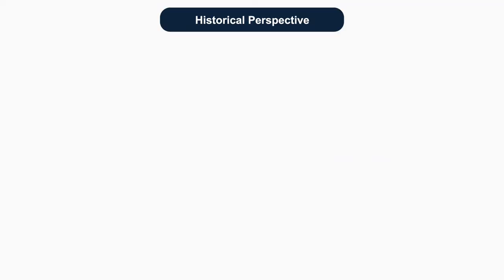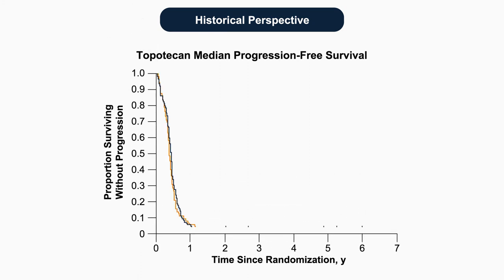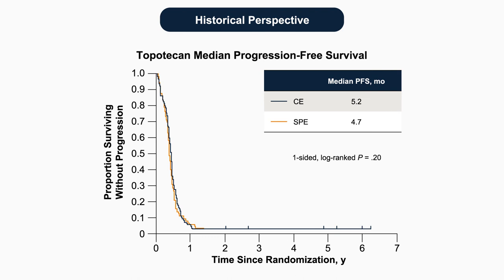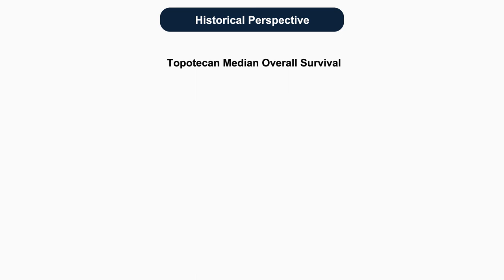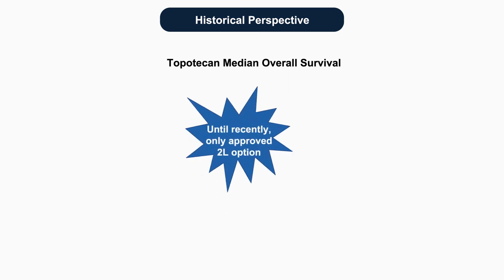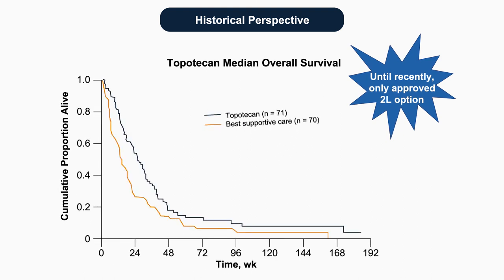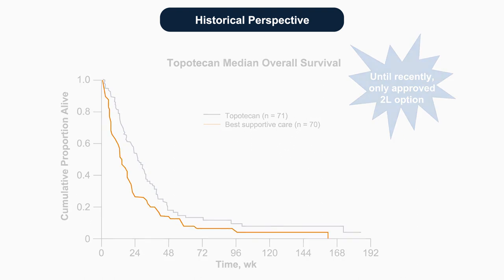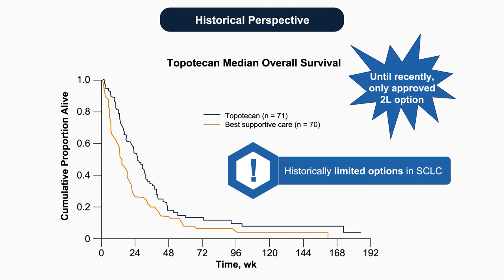When looking at historical perspective for small cell lung cancer, the survival curves have been daunting. As one of my attendings in fellowship would say from the back of the room, that curve is not ski-able, representing the rapid drop-off. Unfortunately, small cell lung cancer curves have looked that way. Looking back at topotecan, which until recently was the only second-line approved option, we see a survival curve relative to best supportive care. The control arm being best supportive care really highlights the limited options available, and although we see separation of these curves, it is not as dramatic as we would hope.